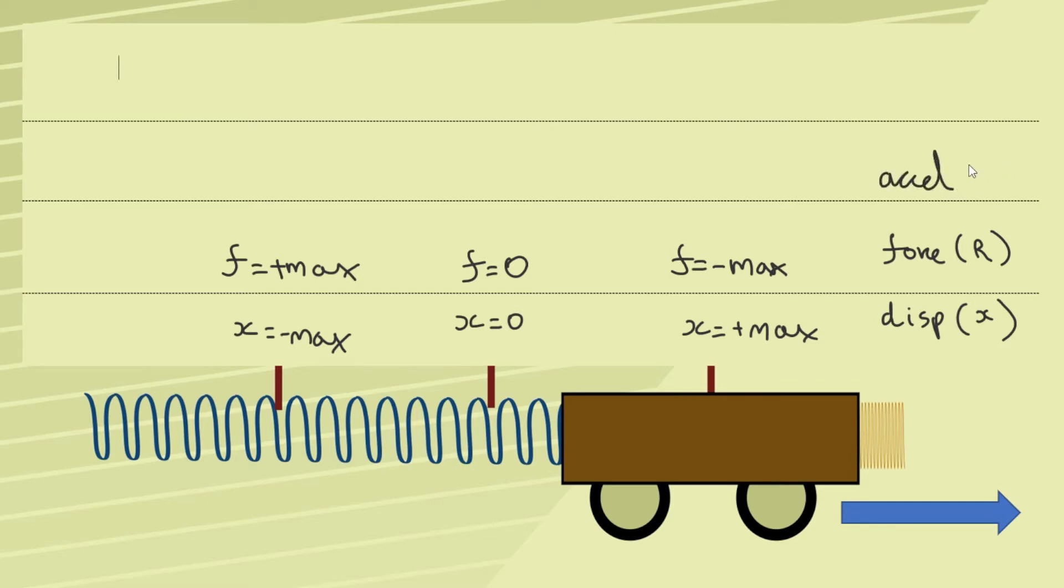Now let's think about acceleration and the thing to remember with acceleration of course is that it is directly proportional to the force. Therefore if there is no force there must be no acceleration. When the force is at a maximum so must the acceleration be but also in the same direction. Therefore it's negative maximum on the right and positive maximum over on the left.